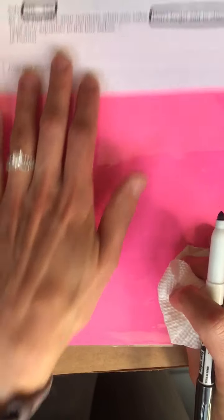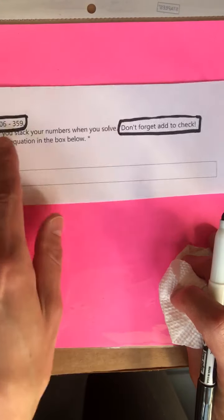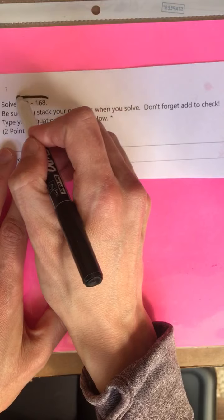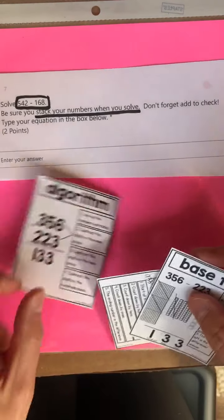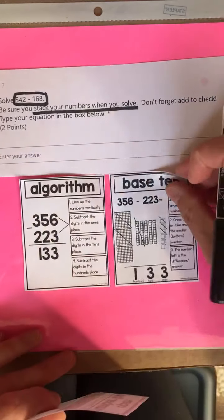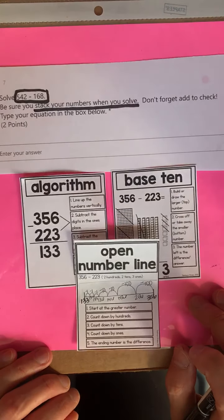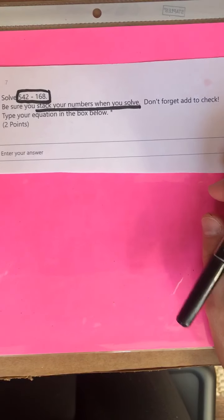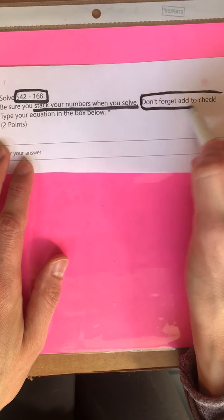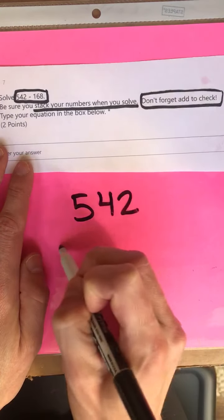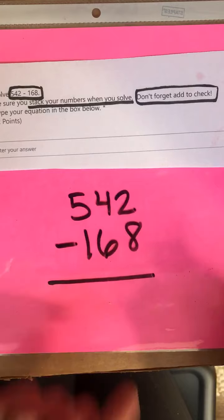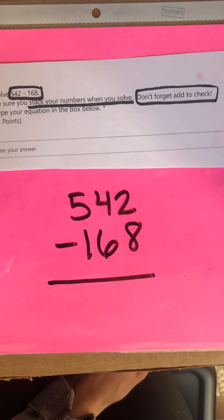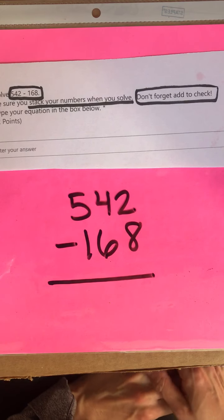Okay friends, great job. I'm not going to go through six with you because you should have added and checked — and if you made a mistake, gone back and fixed it. Let's take a look at number seven together. Number seven looks just like five and just like six. You're going to solve 542 minus 168. Please stack your numbers when you solve. Choose a strategy: the standard algorithm, the place value pictures with the algorithm, or your open number line. When you're done subtracting, don't forget to add and check. Pick your strategy, solve, get your answer, and then add to check. Once you're done with this question, we are done together today, and you can go ahead to your online quiz and submit all your answers. Great job, friends.